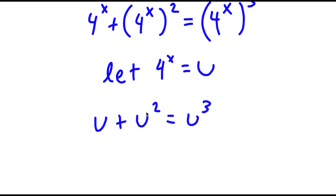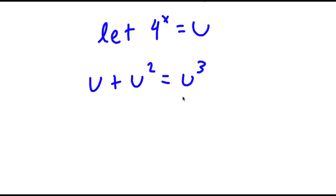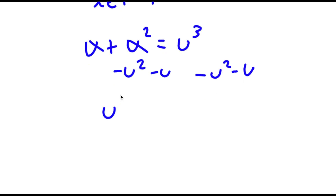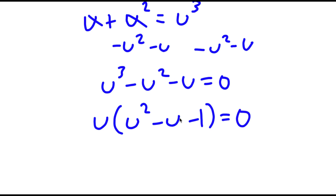To solve this, I'm going to start by subtracting u squared and u on both sides. These cancel out and now I have u to the power of 3 minus u squared minus u is equal to 0. I can factor out u, so I have u times u squared minus u minus 1 is equal to 0.